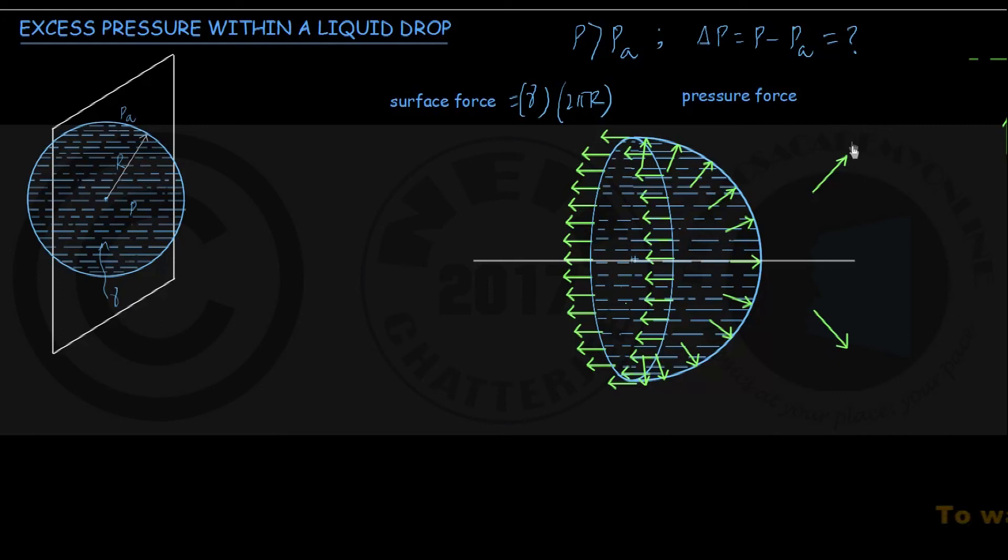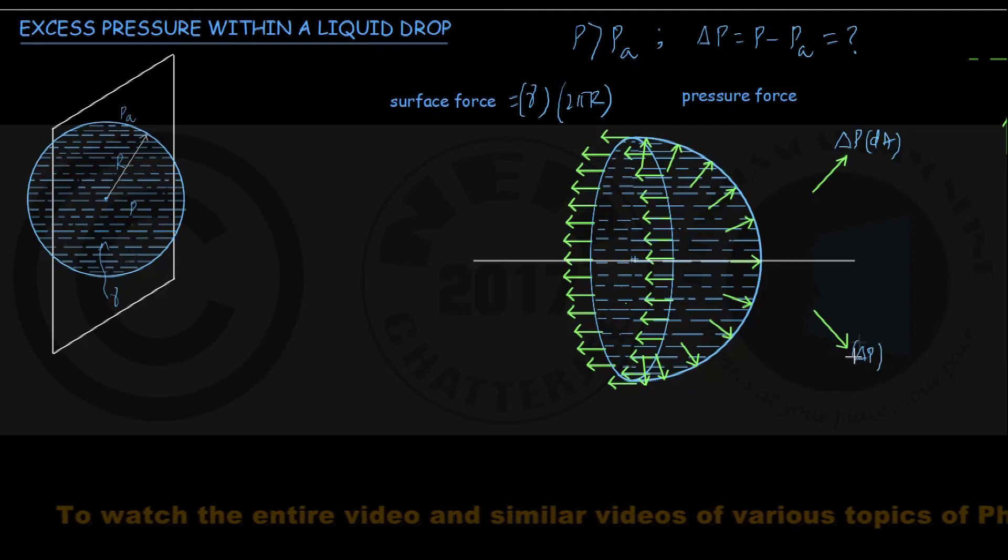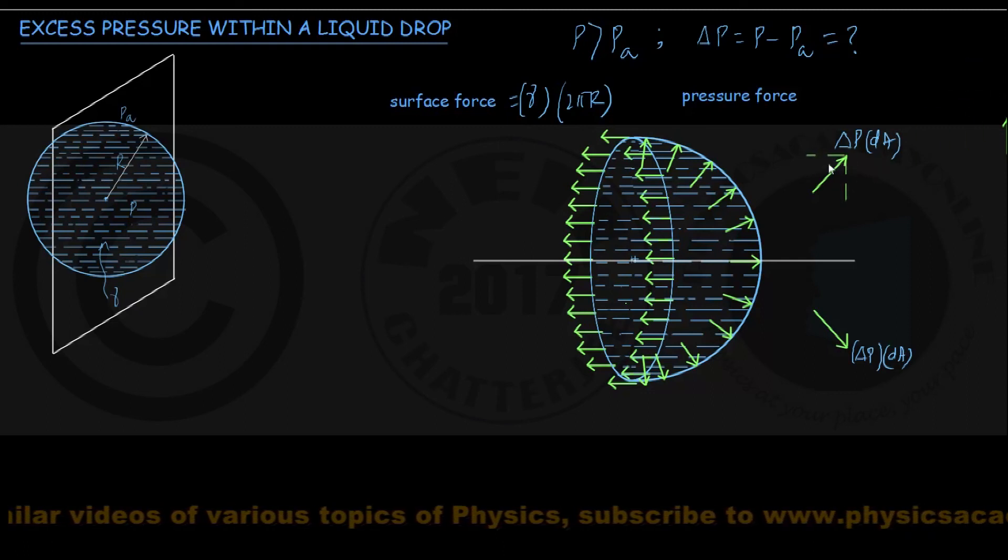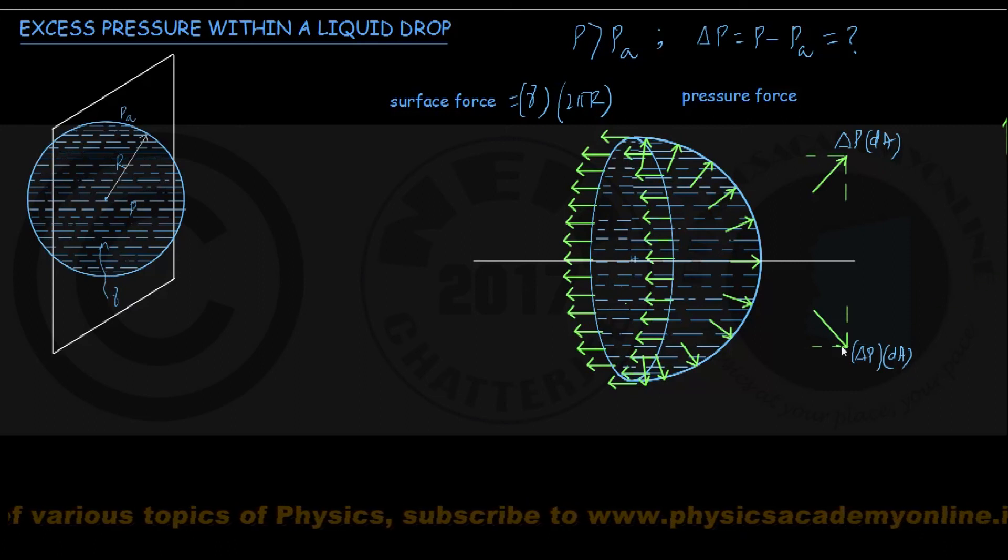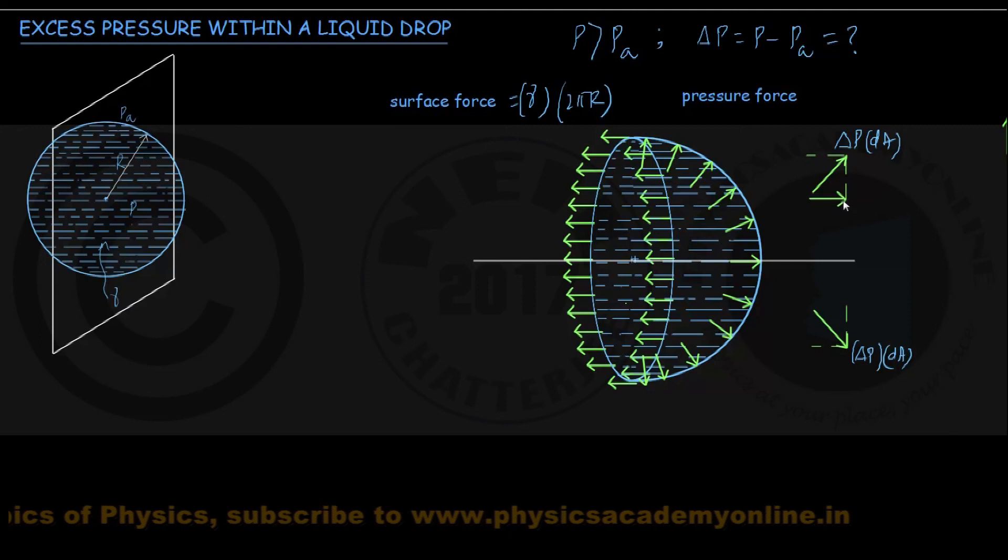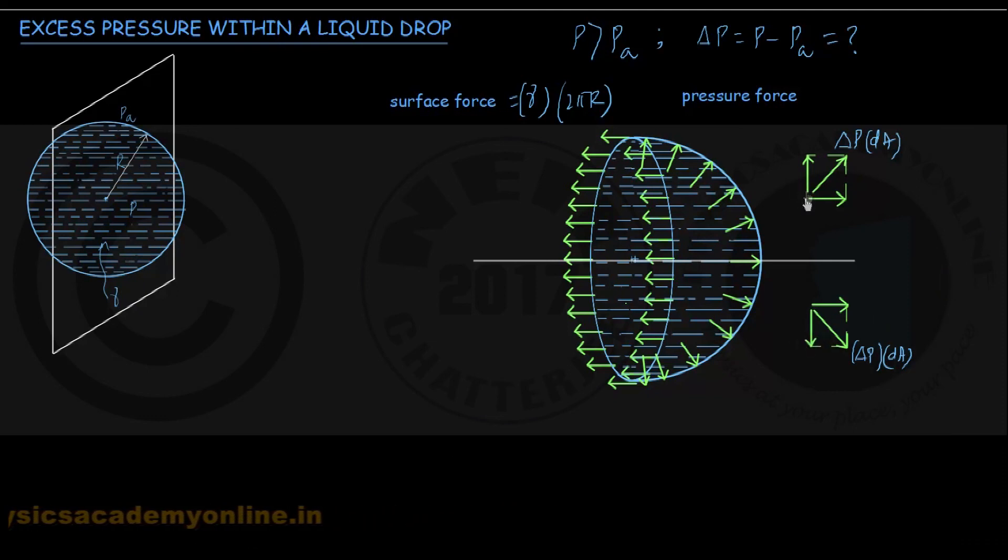If delta P is the excess pressure acting outwards, delta P into the area dA gives the magnitude of the force. The same magnitude but different directions. I resolve these pressure forces into their respective components, and you can see easily that by symmetry, the components of these two forces acting perpendicular up and down cancel each other.